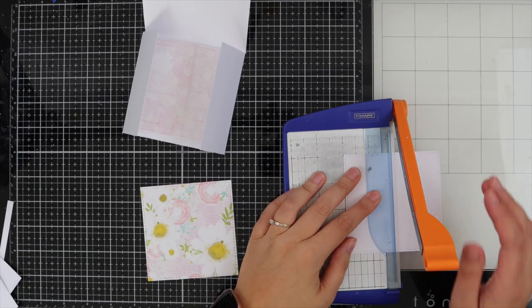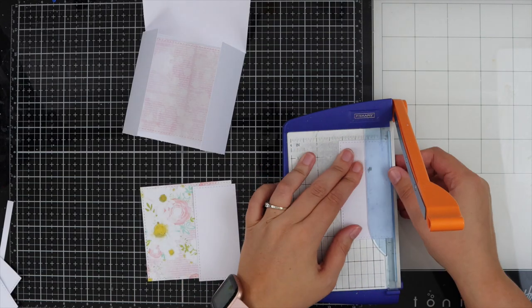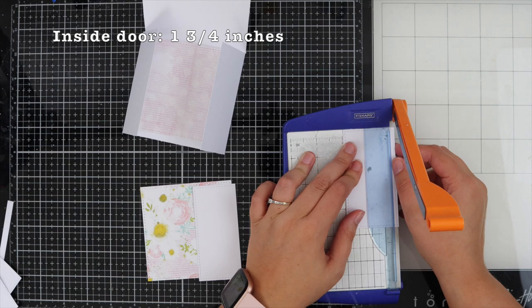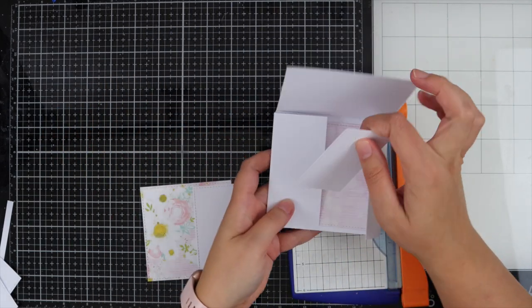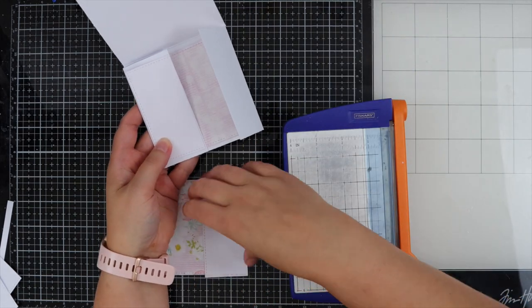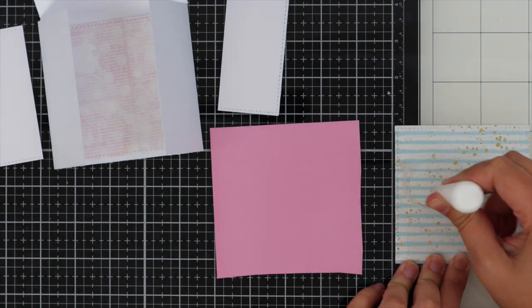Once my pieces are die cut, I'm going back to that first white piece of card and trimming it down a little bit so it will sit on the hidden doors. I've put the measurements on screen.